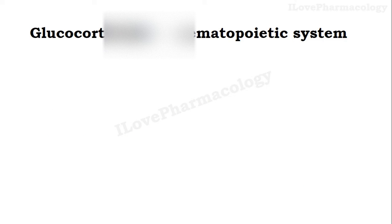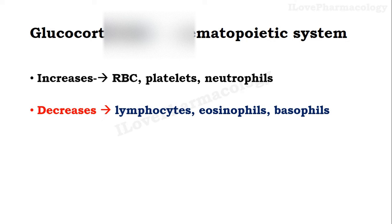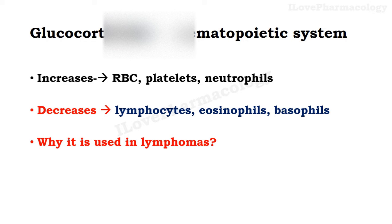Coming to glucocorticoid activity on the hematopoietic system — that is on the blood. Basically it increases RBC, platelets, and neutrophils, whereas it decreases lymphocytes, eosinophils, and basophils. There is one important question: why are glucocorticoids useful in lymphoma? To know this answer, please stay till the end.